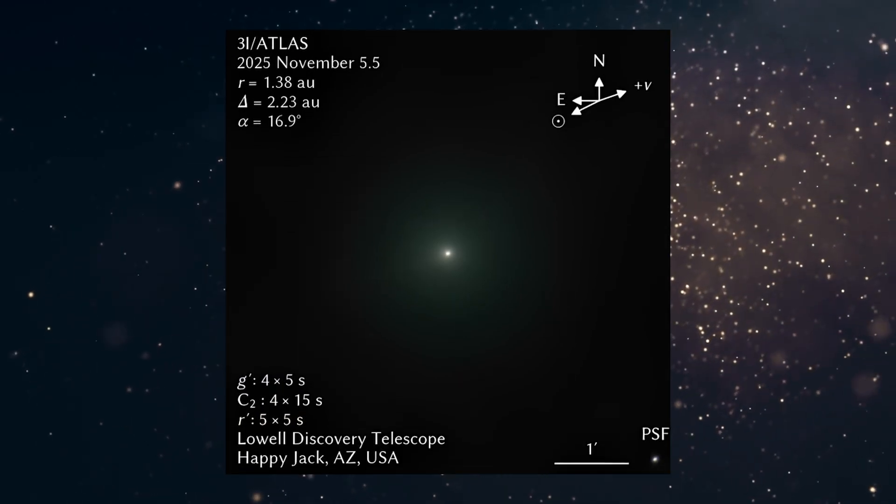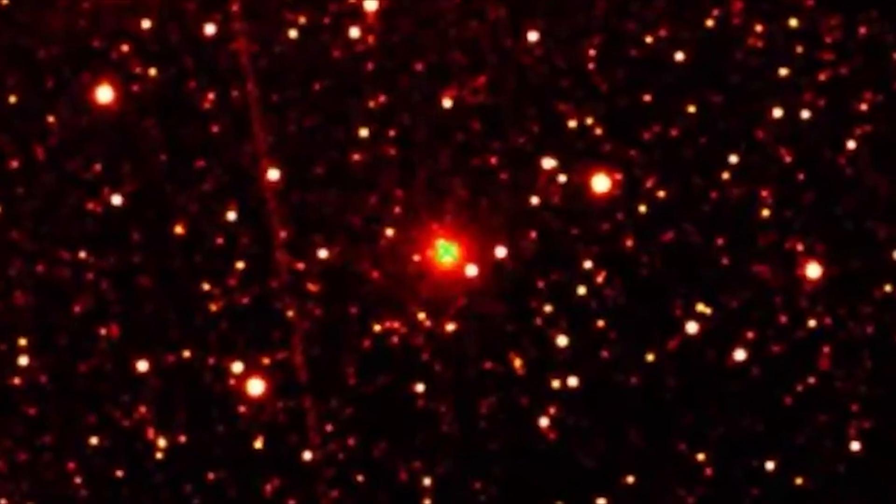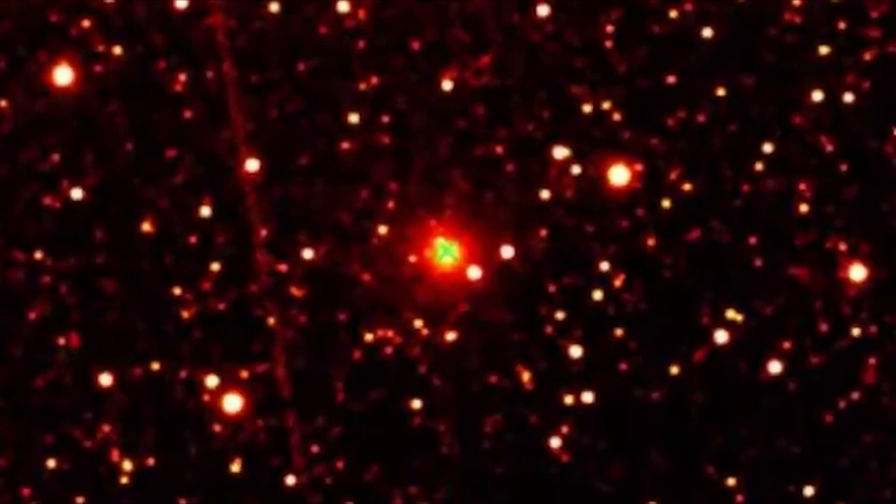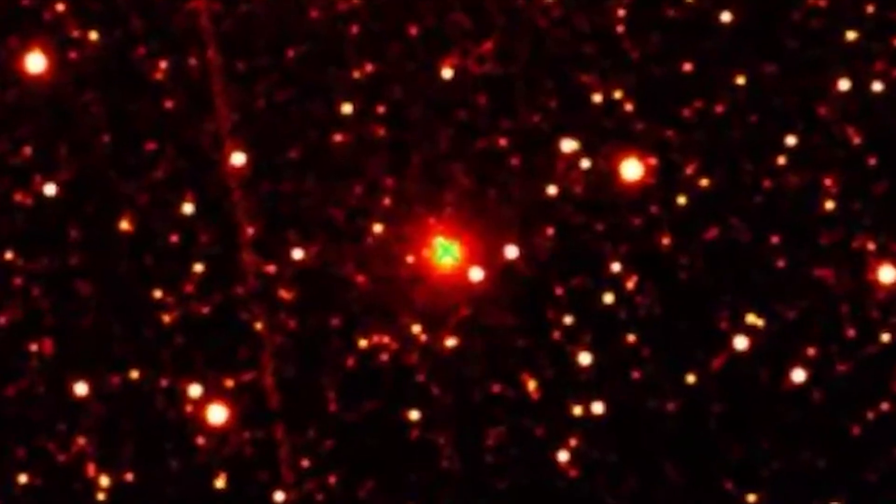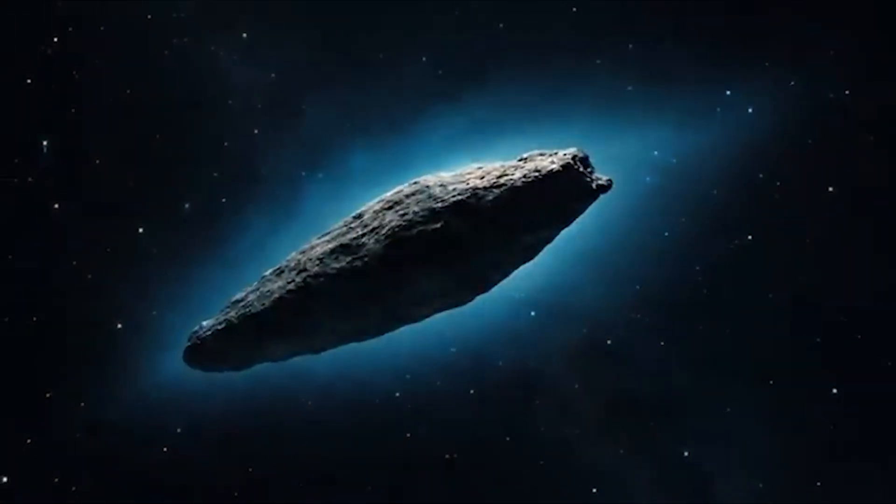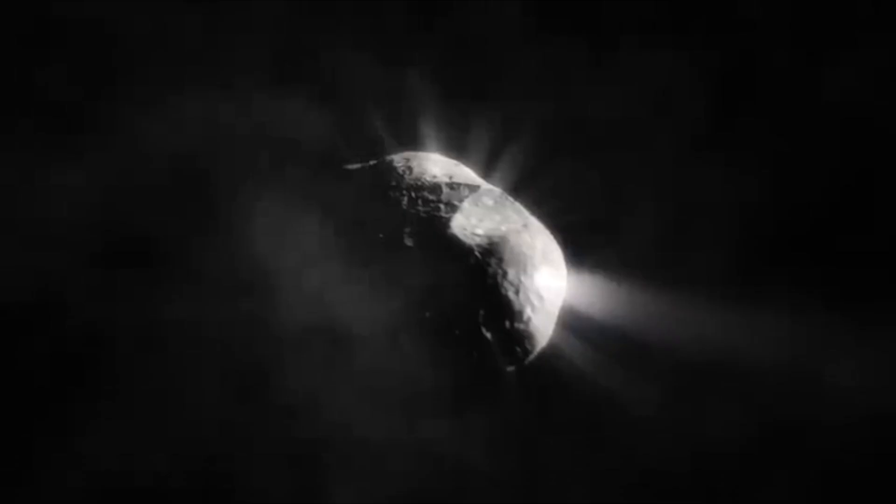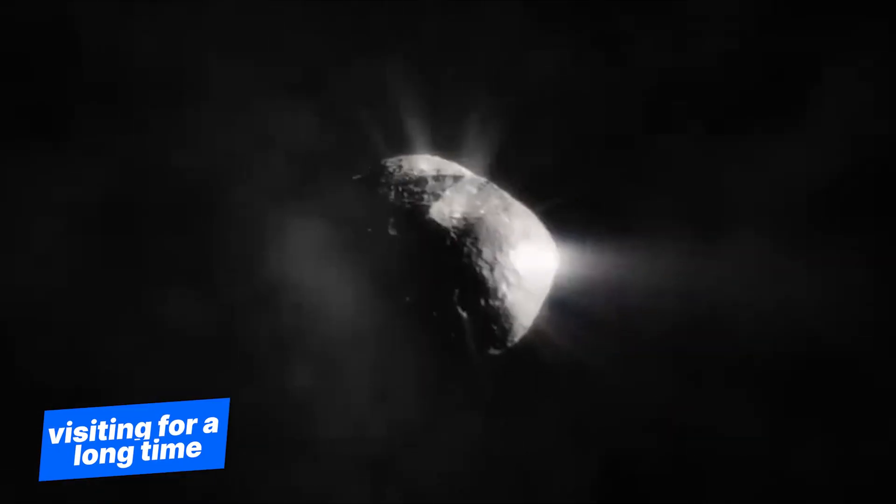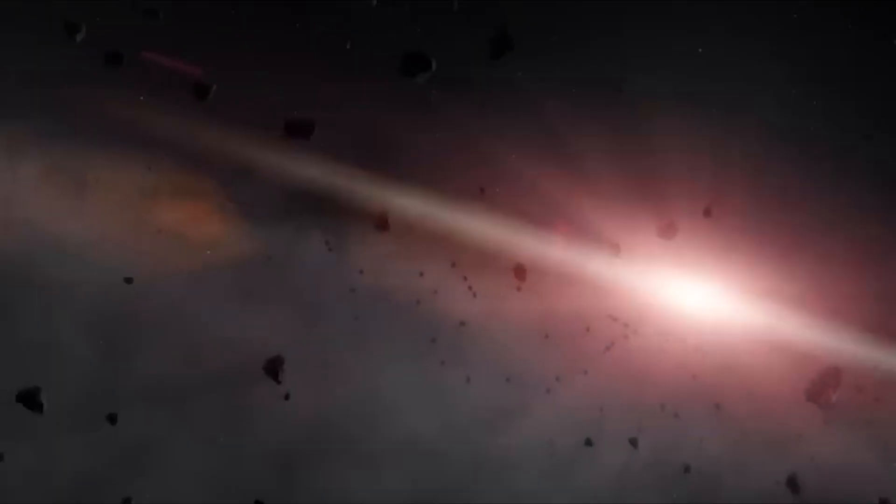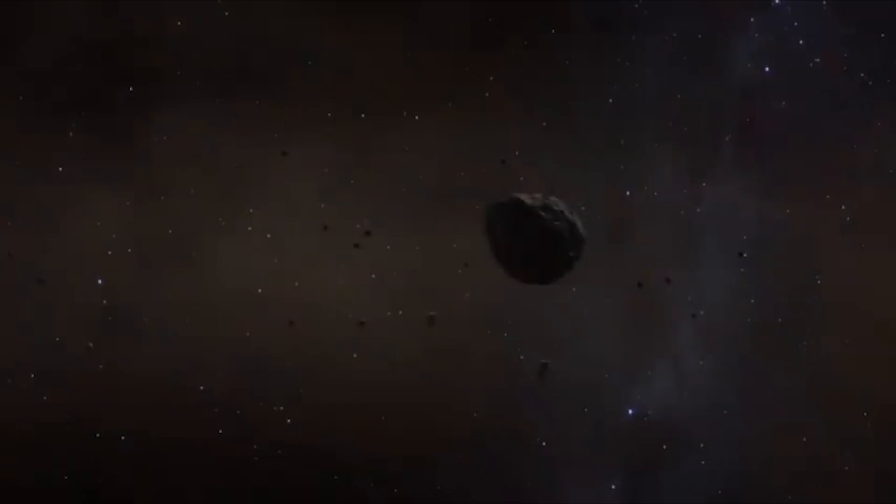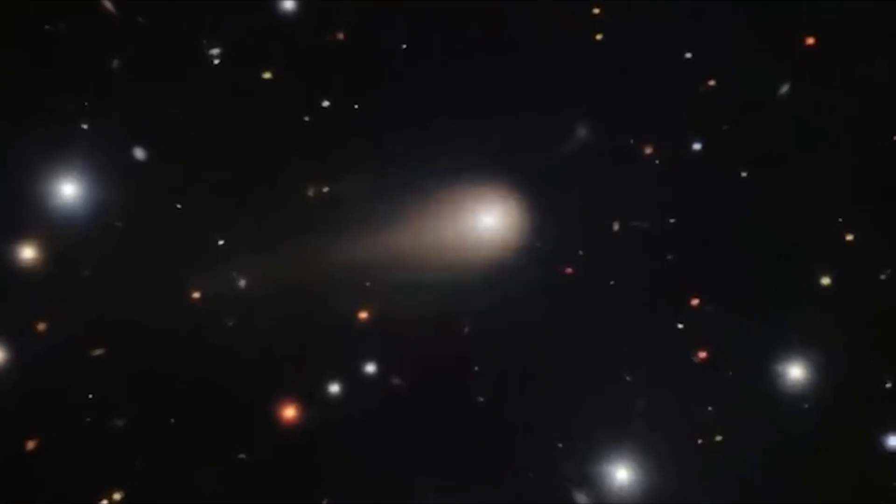If 3I Atlas is artificial, it means we're not alone. It means someone out there has technology advanced enough to send probes between stars. It means they might know we're here. But even scarier, it means they might have been visiting for a long time. How many other comets were actually probes? How many did we miss because nobody was looking for technology?